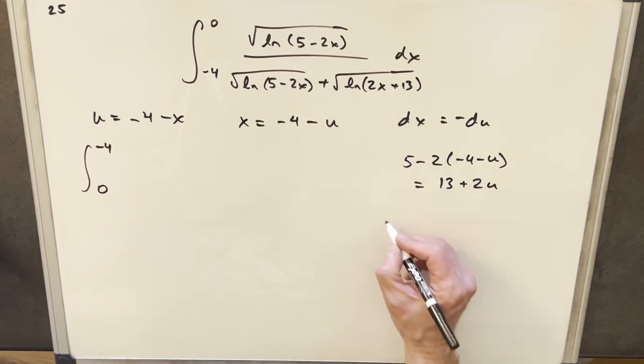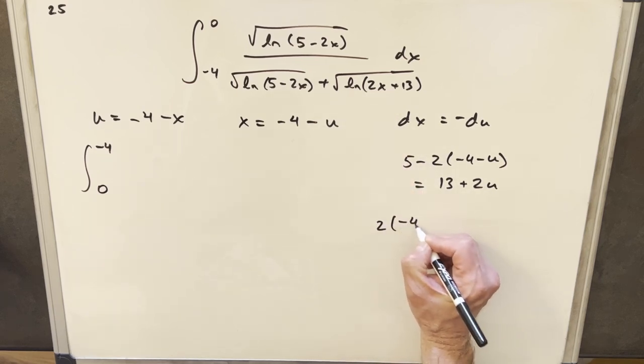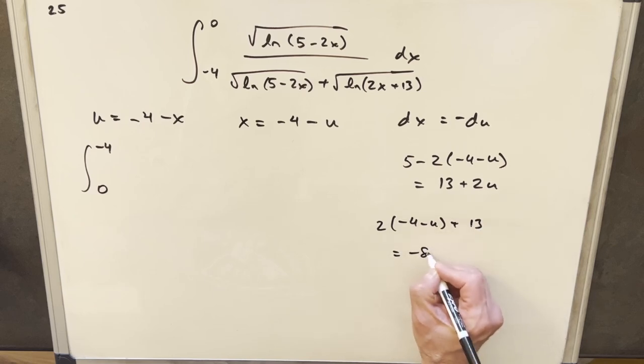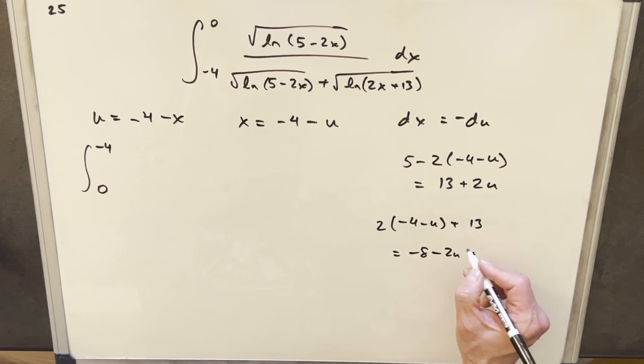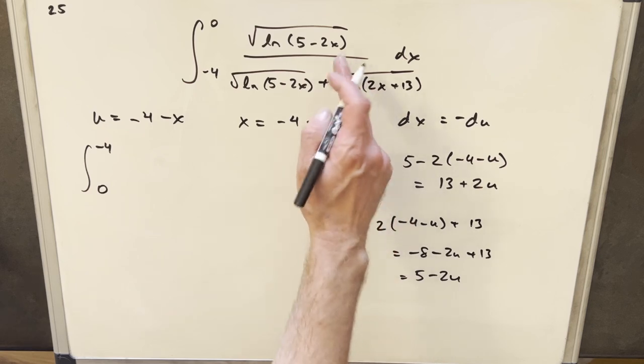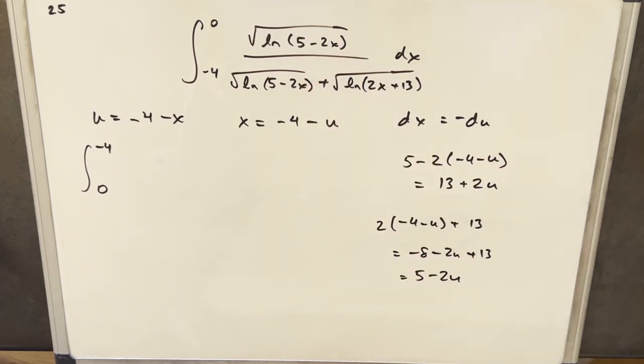Let's see, then let's look at our 2x plus 13. So that's going to be 2 times minus 4 minus u plus 13. So we're going to have minus 8 minus 2u plus 13, and that's actually going to be 5 minus 2u. So notice our 2x plus 13 becomes 5 minus 2x, except in u. So it kind of just flips everything around.